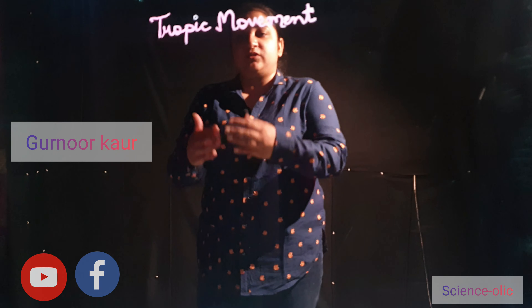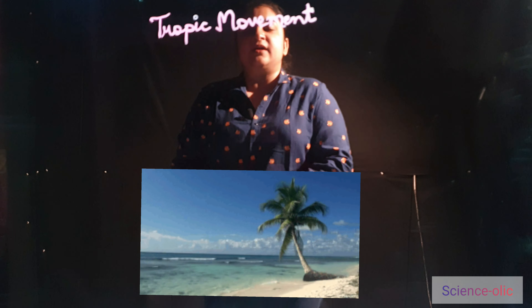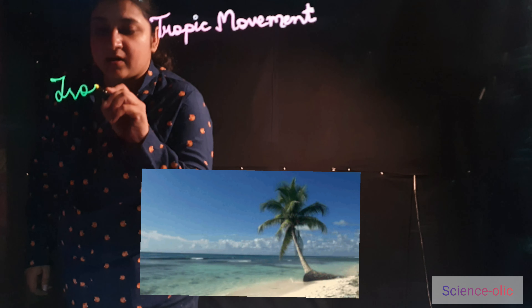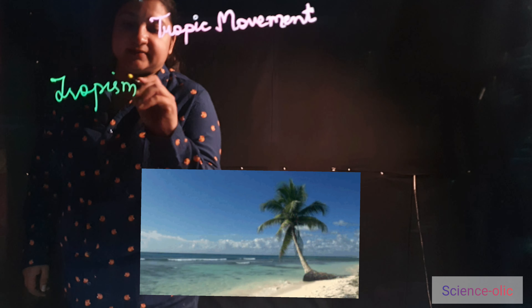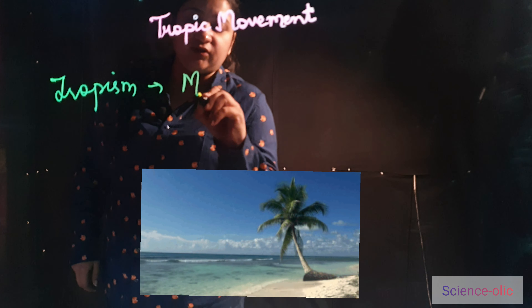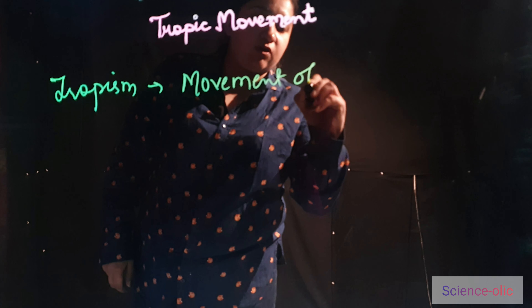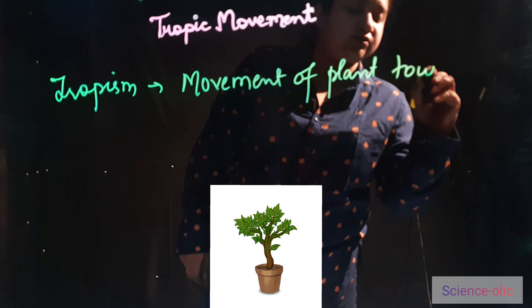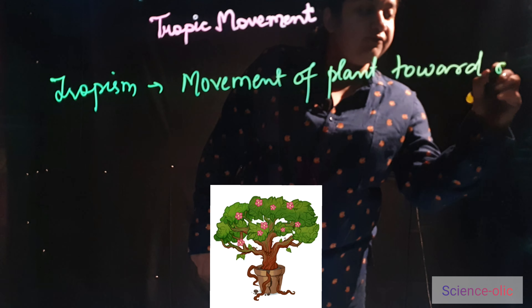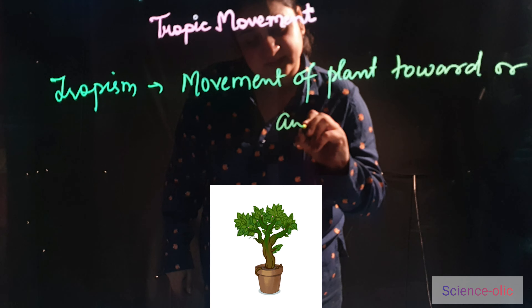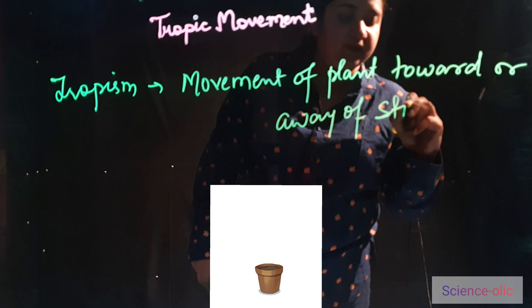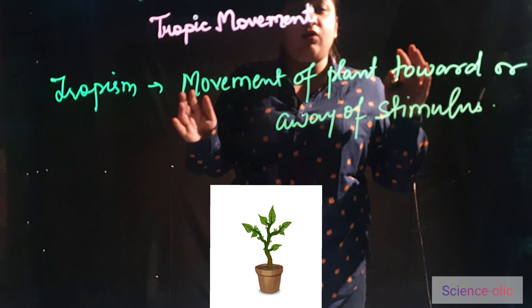Hi friends, myself Gunur Kaur, and today I'm going to discuss about tropic movement. Let's discuss tropism. Tropism is the movement of plants towards or away from the stimulus.